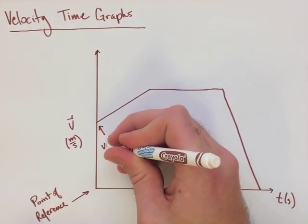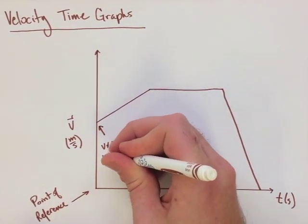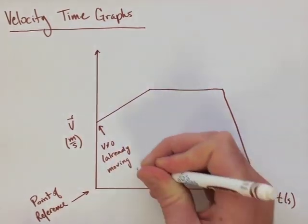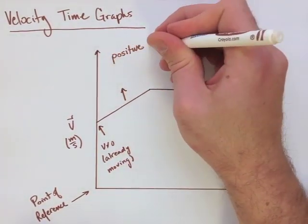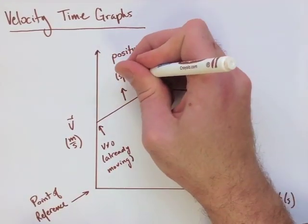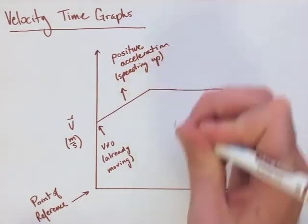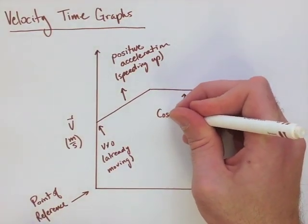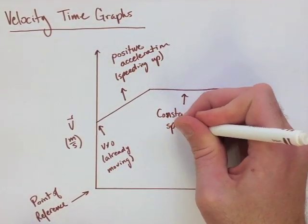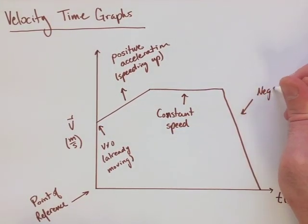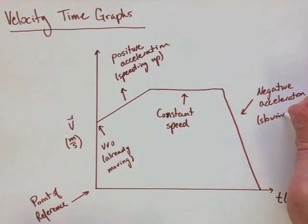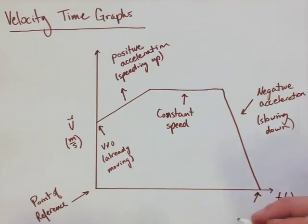There are a few things we need to notice about this graph. First, our starting point isn't at 0, so this means we're already moving. The second thing we're going to look at is that we're increasing our velocity here, so we have positive acceleration, means we're speeding up. We then have a flat line, that means our velocity is staying the same over some period of time, so we have a constant speed. We then have a drastic decrease in our velocity, which means we have negative acceleration, or we're slowing down. Now with our reference point being 0, once we get back to that point, we've come to a complete stop.